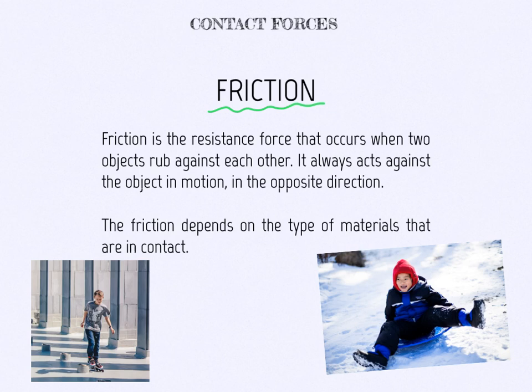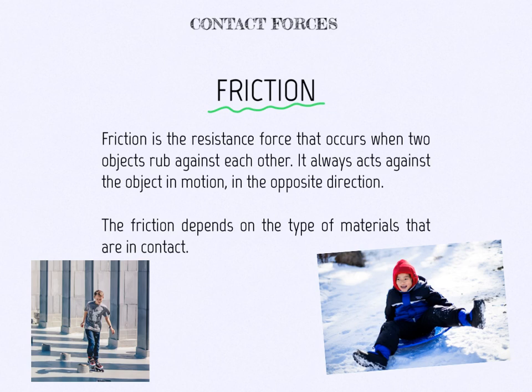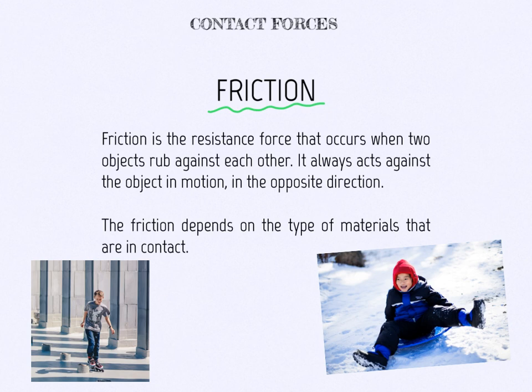Friction depends on the type of materials that are in contact. For example, here he's sliding down on the snow — there will be very little friction. Why? Because you can slide on the snow, and also he has a sledge to go down. If he were standing, there would be more friction, but with this object he can slide down very easily.